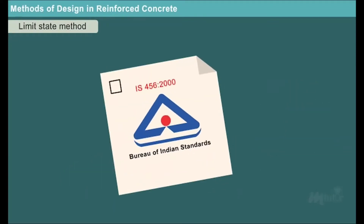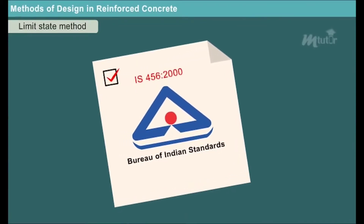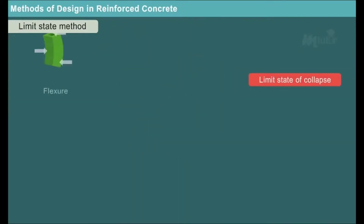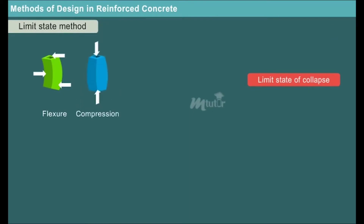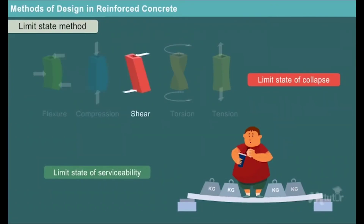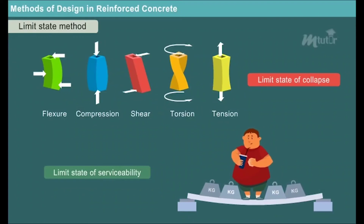As per IS 456-2000, all limit states shall be considered in design to ensure adequate safety and serviceability. Two categories of limit state are considered for designing a structure. One is the limit state of collapse, which includes limit state of collapse in flexure, compression, shear, torsion and tension. The other is the limit state of serviceability, which includes limit state of deflection, cracking, vibration, fire resistance and durability.